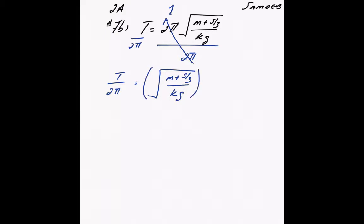To cancel out the square root, we're going to square both sides. This makes 1. So t over 2 pi squared equals m plus s over 3 divided by kg.